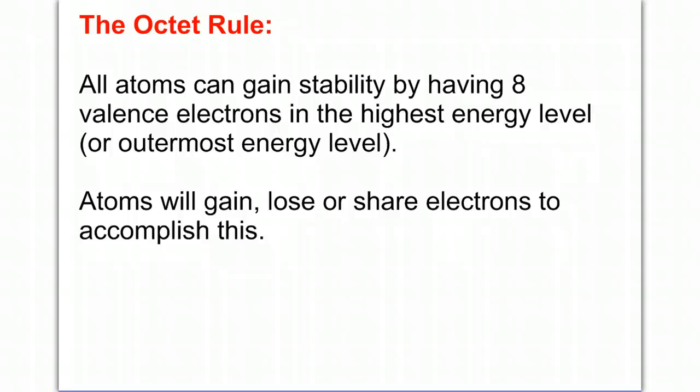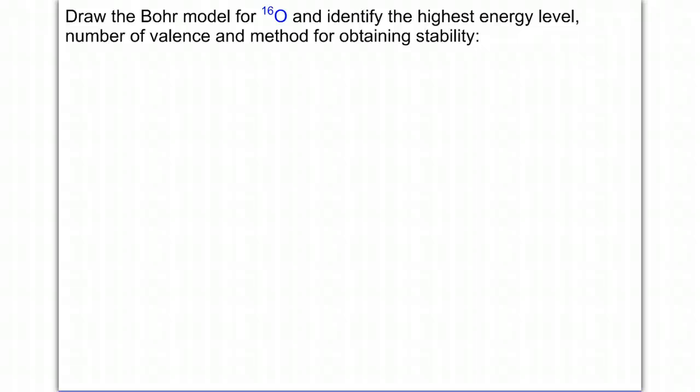The octet rule is all atoms can gain stability by having eight valence electrons in the highest energy level or the outermost energy level. So atoms will gain, lose, or share electrons in order to accomplish this octet rule. So let's do some examples.